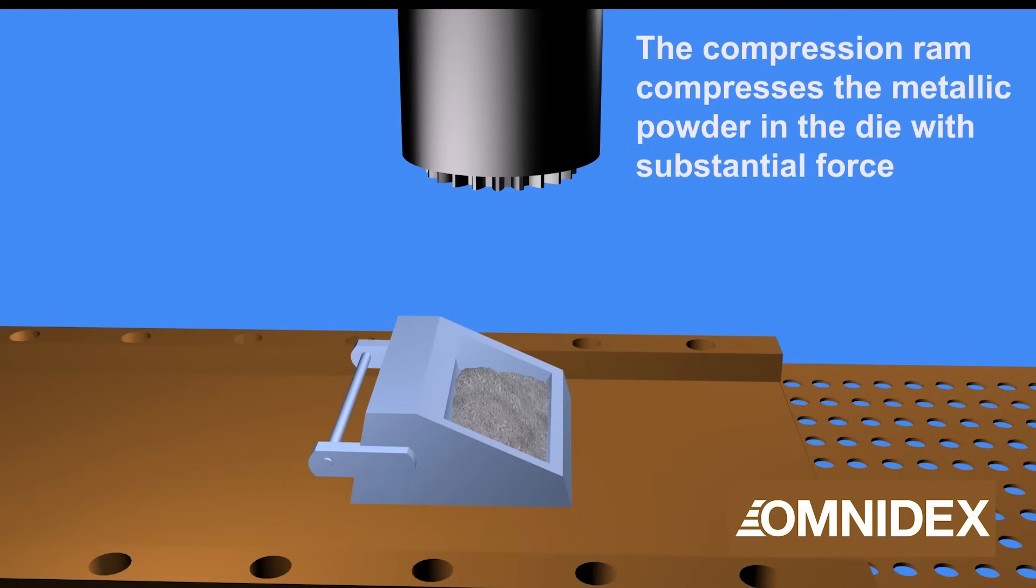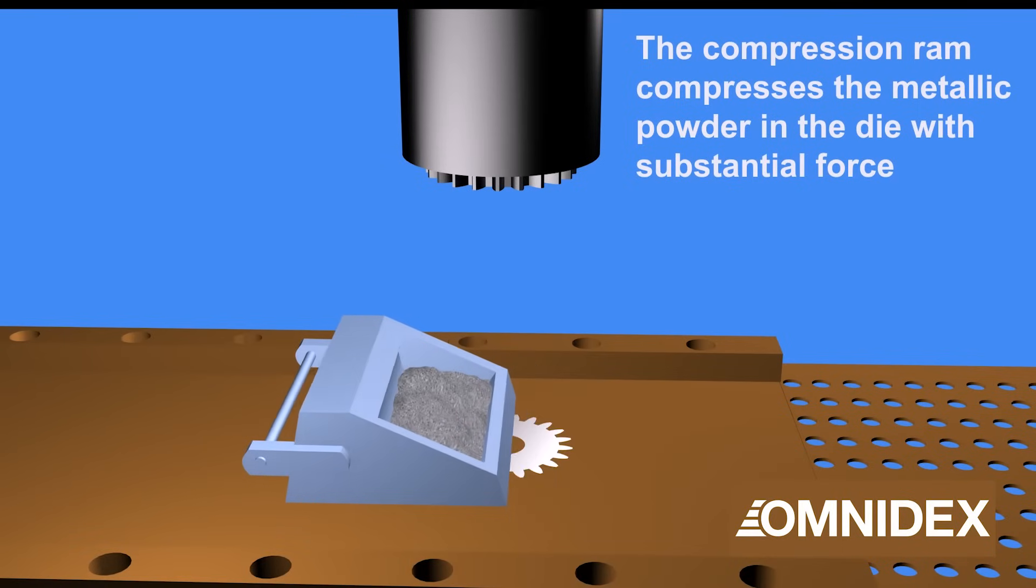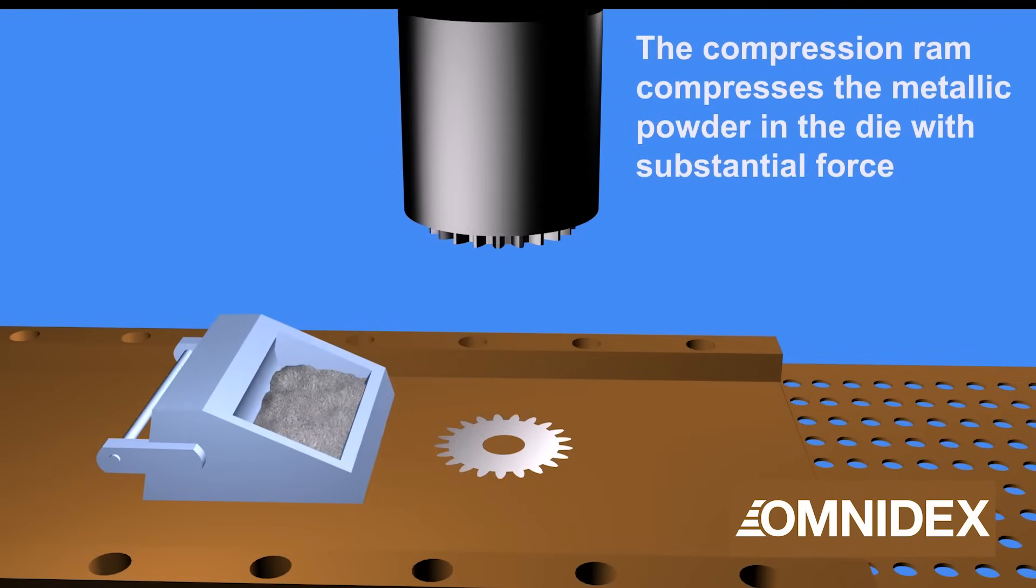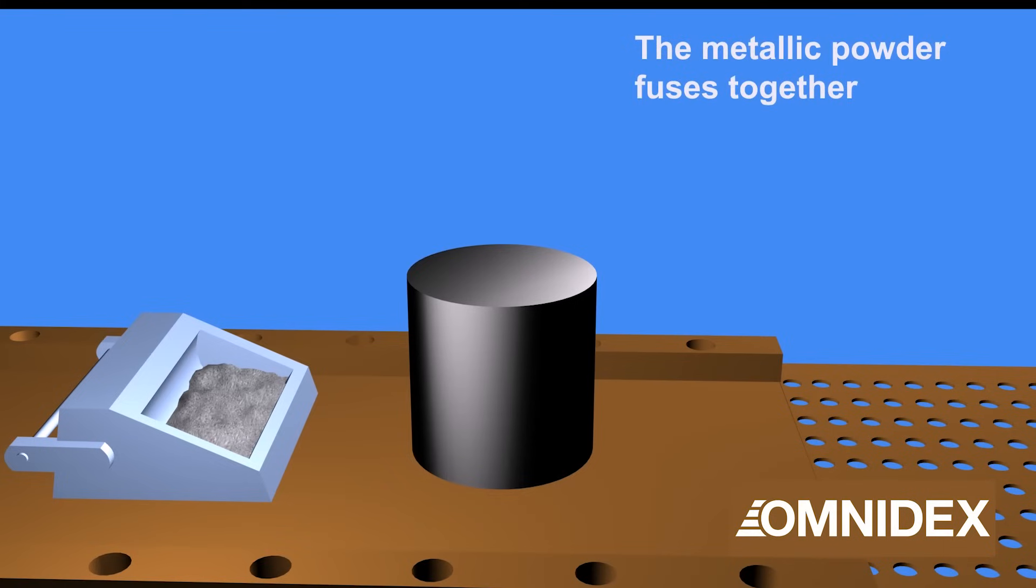Next, the compression ram compresses the metal powder to form the shape of the part. A substantial force is needed to press the metal powder into one piece.